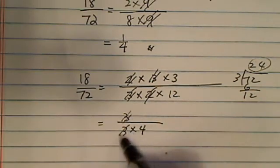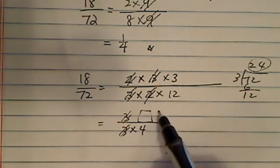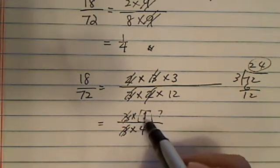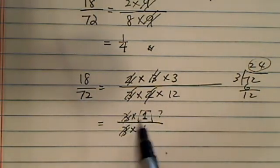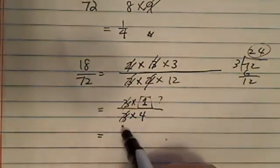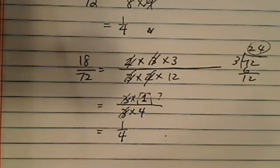Now, a lot of students say, if I cancel this, there's nothing left. So what happens? It's not nothing left. It's actually 3 times 1, because 3 times 1 is 3. So it's not that there's nothing left. We just don't write the ones, and the answer's still 1 over 4.